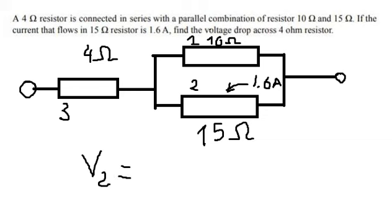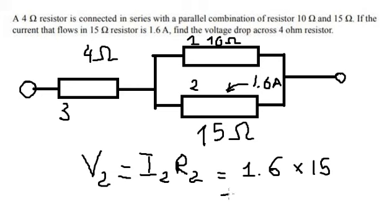V2 equals I2 multiplied by R2. So we got 1.6 multiplied by 15, we got 24 volts.